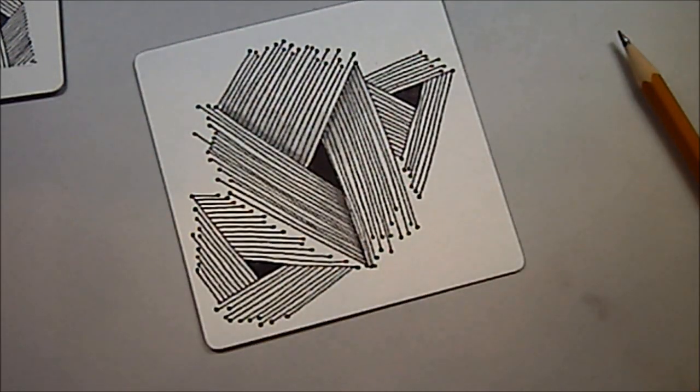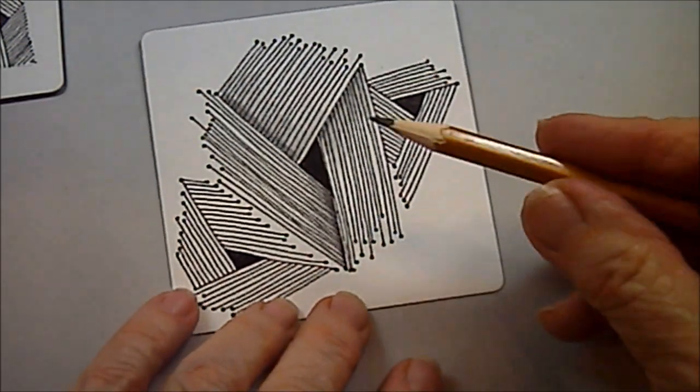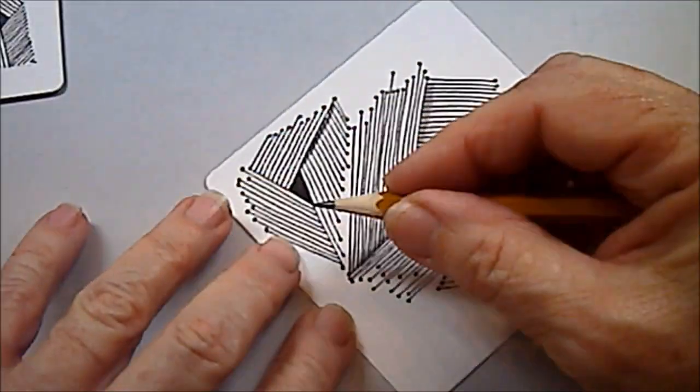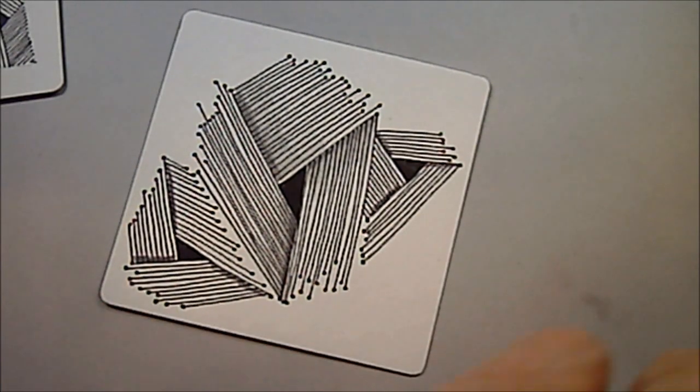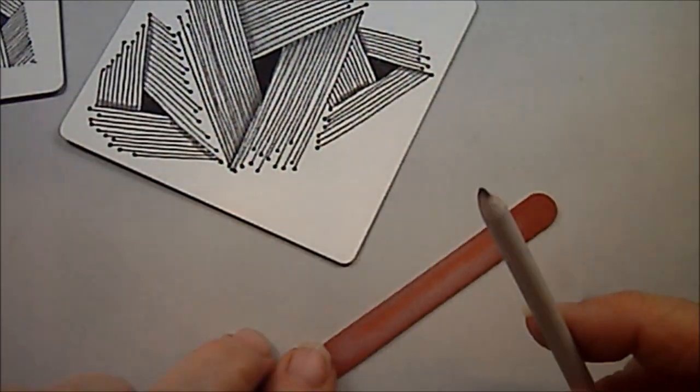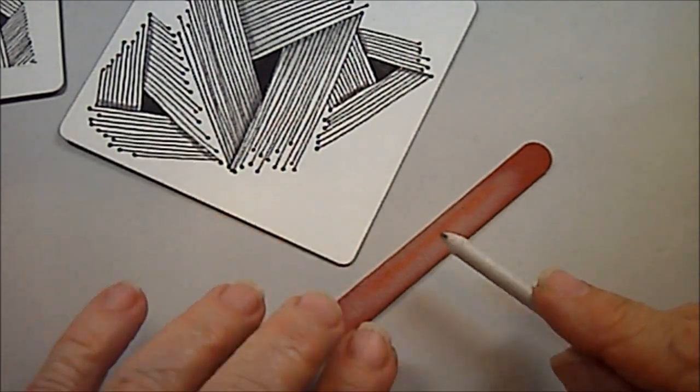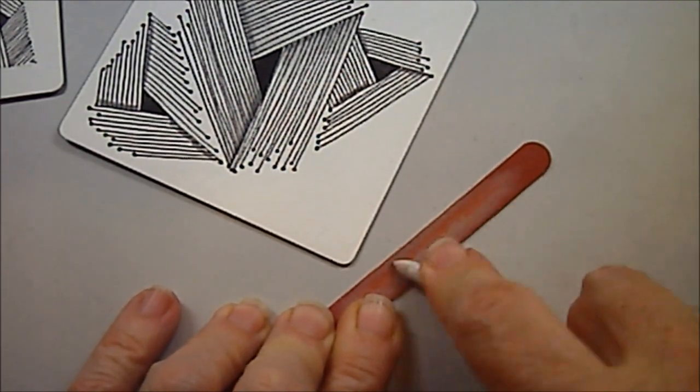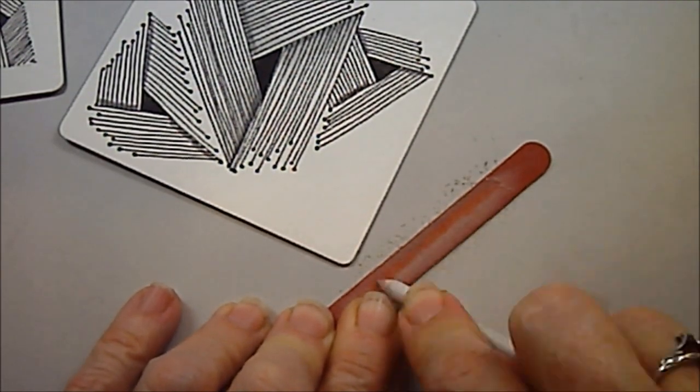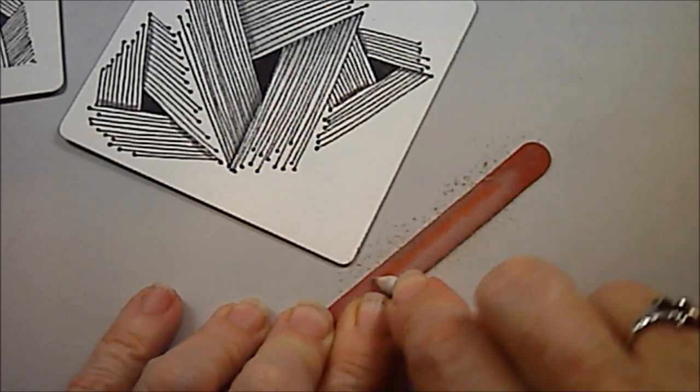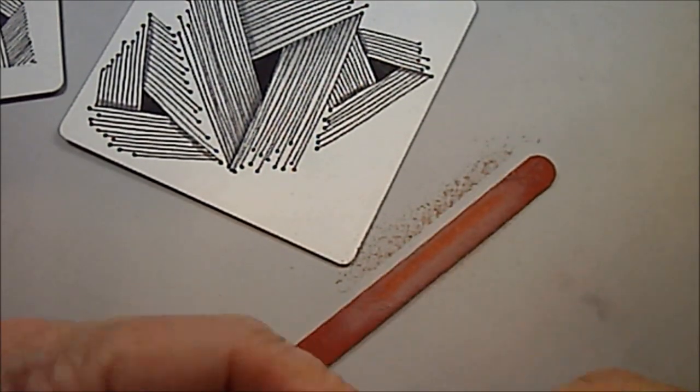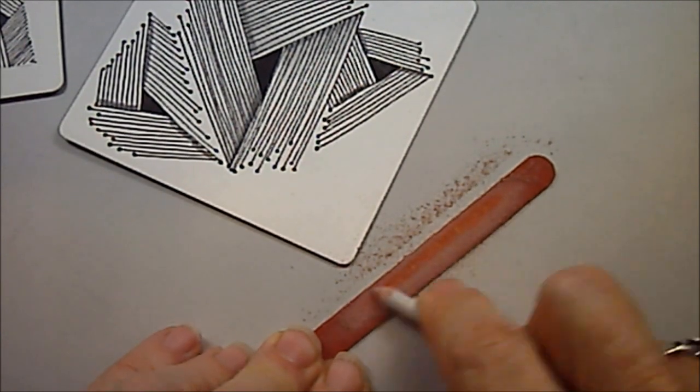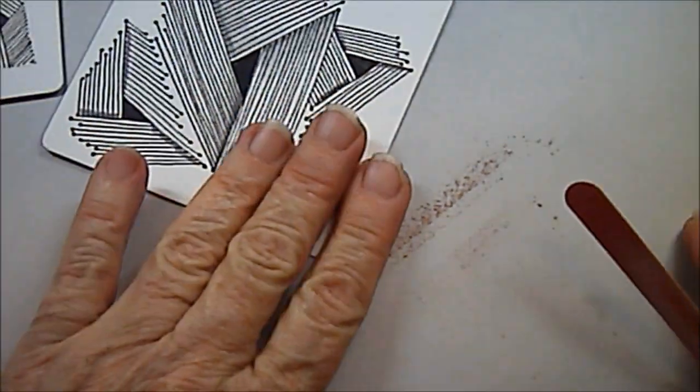And now we can go back and shade these two. Remember that having a clean shading stump does more than just not transfer a lot of graphite. It also roughs up that shading stump so that you can get a better blend with your tool.